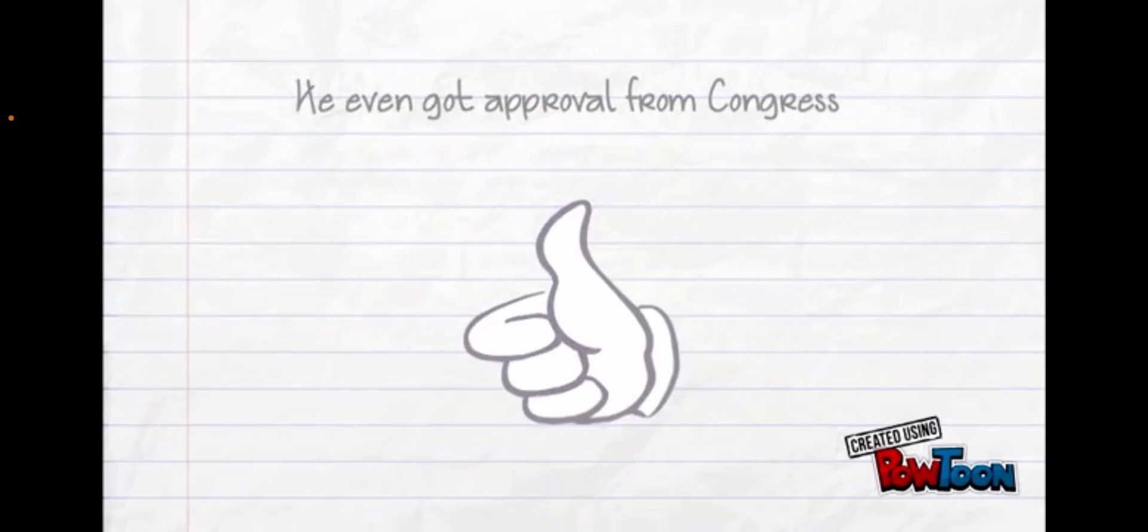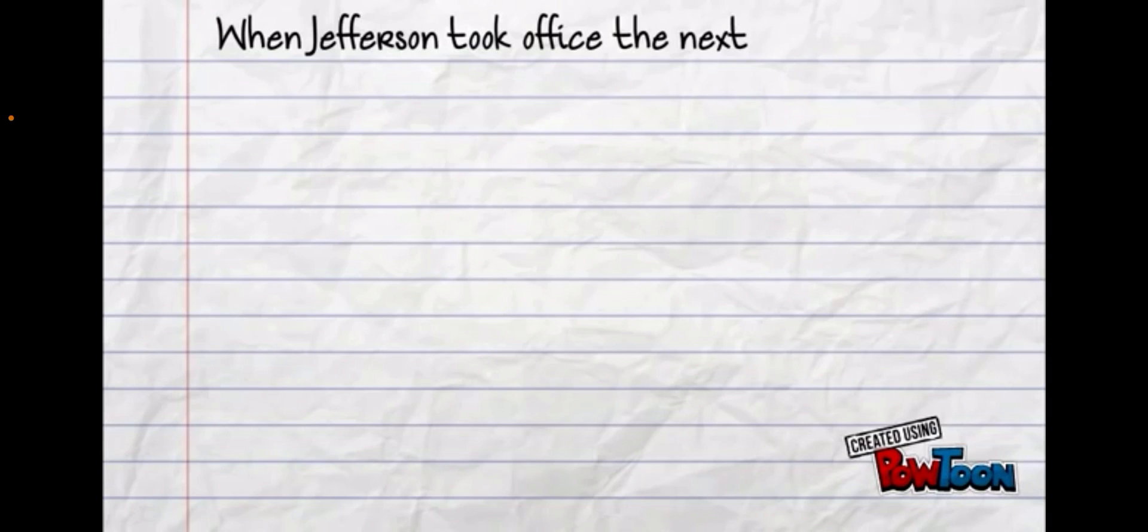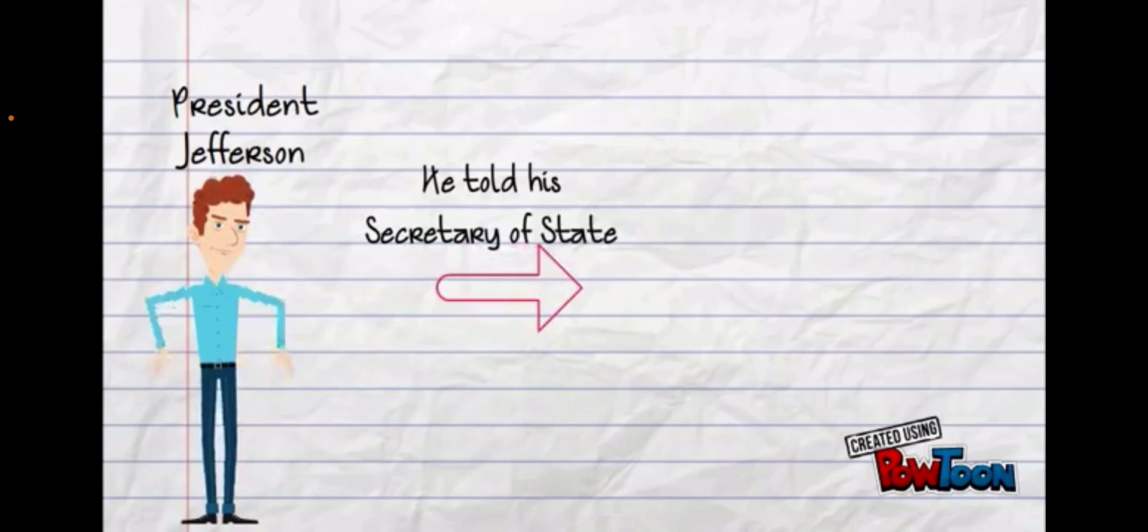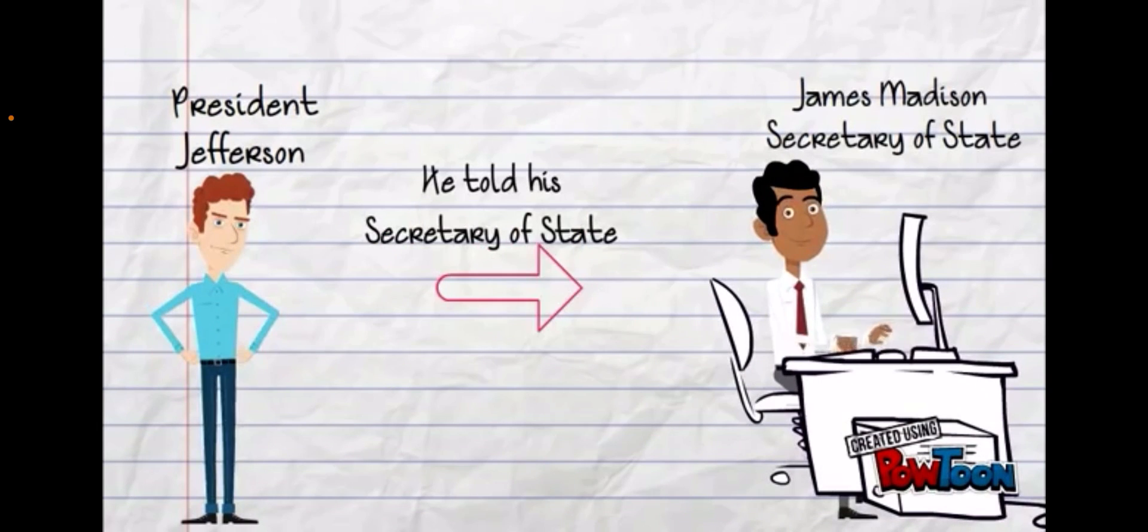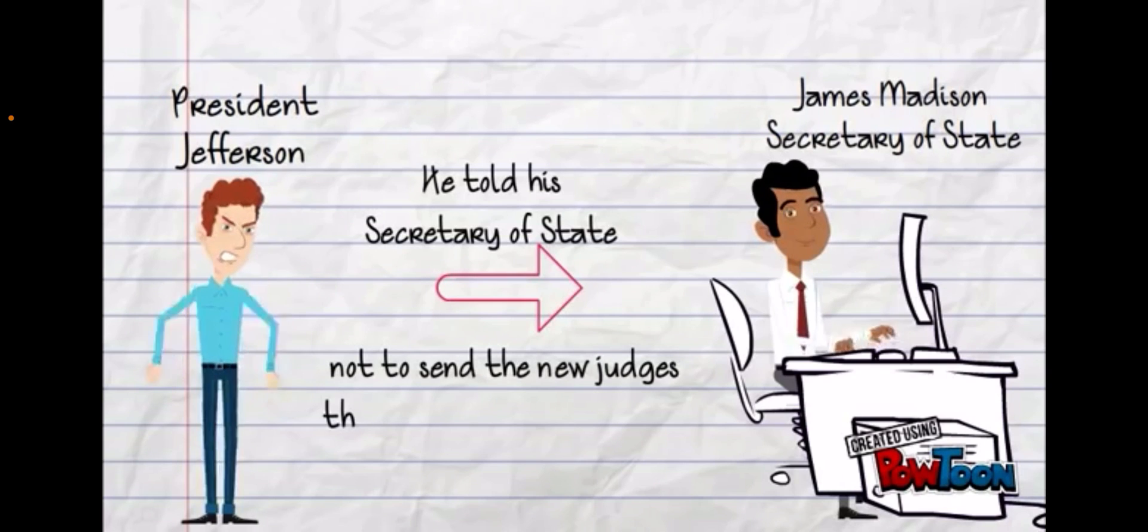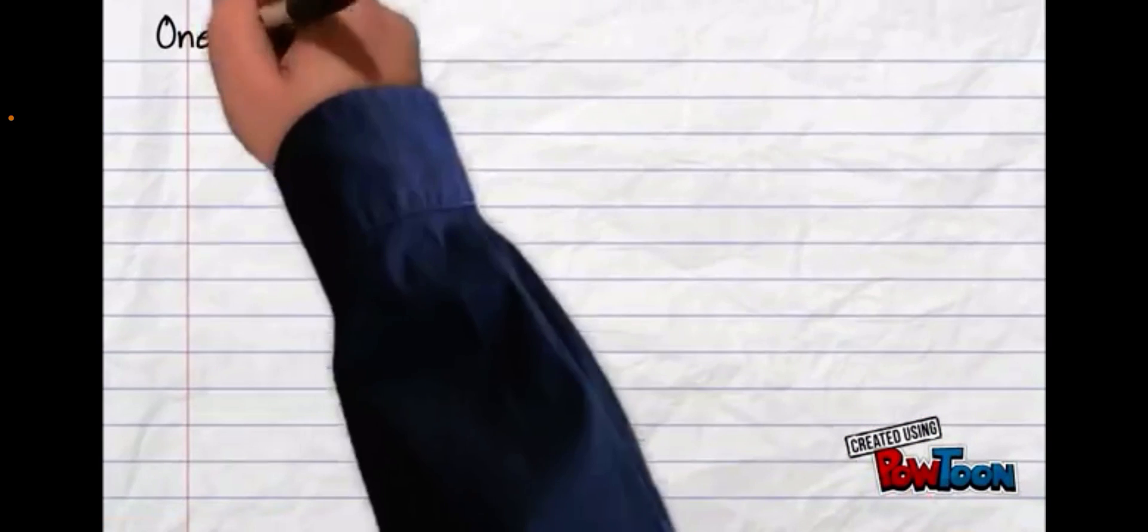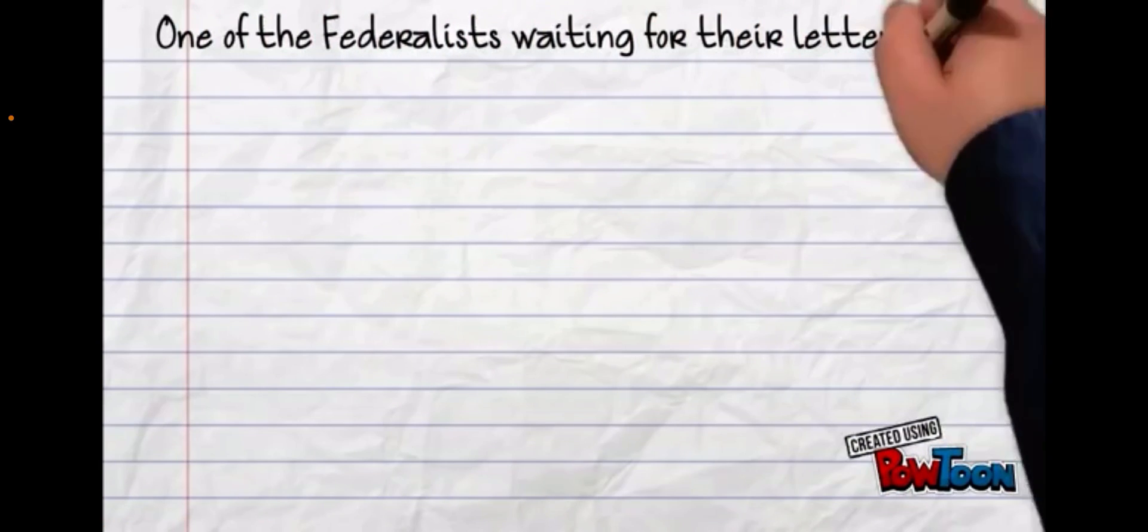When Jefferson took office the next day, he was not happy. President Jefferson told the Secretary of State, James Madison, to not send the new judge letters officially giving them the job. One of the Federalists waiting for their letter to be appointed judge was William Marbury.